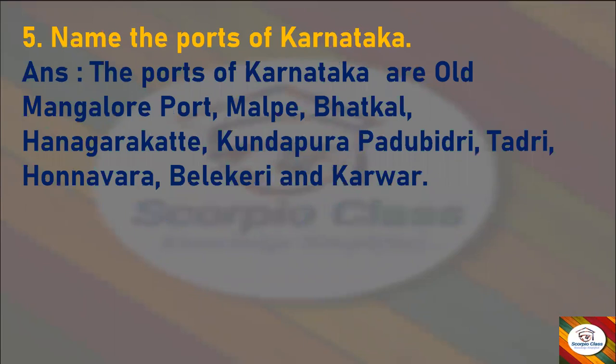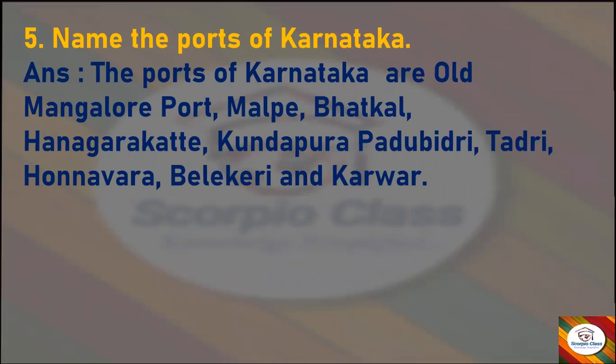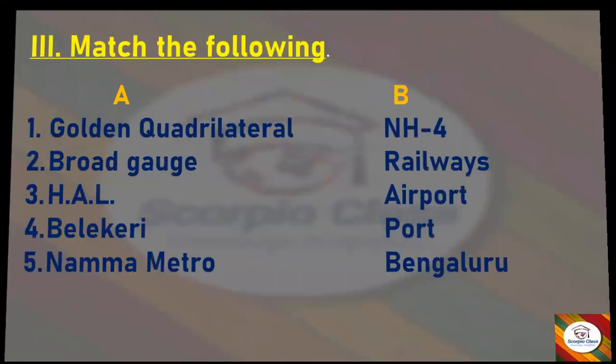Next question — Name the ports of Karnataka. Answer: The ports of Karnataka are Old Mangalore Port, Kundapura, Padubidri, Tadri, Honnavara, Belakiri, and Karwar. These are the ports of Karnataka. That completes the 'Answer the Following' section.